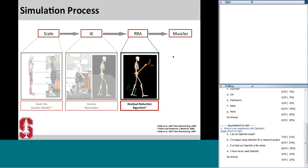In the next step, called the residual reduction algorithm (RRA), we solve for a set of joint torques that will drive the model and track the motion determined with inverse kinematics. However, due to experimental errors and modeling assumptions, measured ground reaction forces and moments are not dynamically consistent with the model kinematics. When we solve the dynamic equation, an extra force and moment termed residuals — represented by an orange arrow — is applied to the pelvic segment. The goal of RRA is to minimize these non-physical forces by slightly altering parameters we know have errors, such as joint angles and the location of the torso mass center.